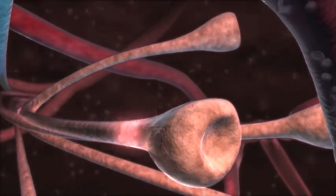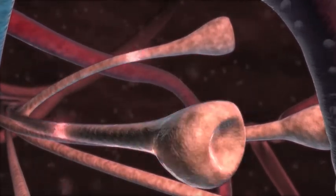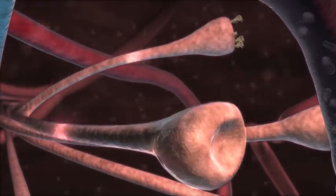These action potentials may also be conducted antidromically along collateral branches of the fibers, back towards the nerve endings causing the release of neurochemicals.